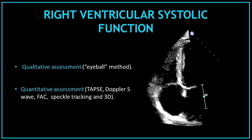In order to assess the right ventricular systolic function, we can perform a qualitative assessment or a quantitative assessment. Qualitative assessment is a visual assessment of the right ventricular systolic function, commonly known as the eyeball method. Quantitative assessment is when we actually use measurements, such as TAPSE, Doppler S-wave, fractional area change, speckle tracking, and 3D. In this video specifically, we are going to learn how to measure the fractional area change.